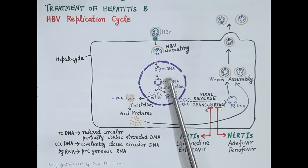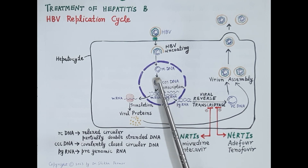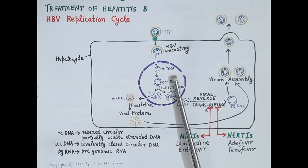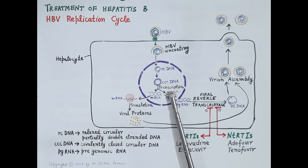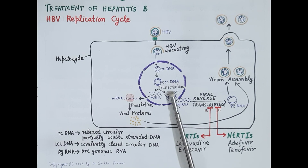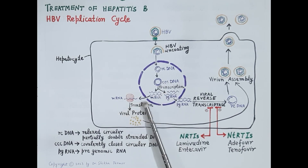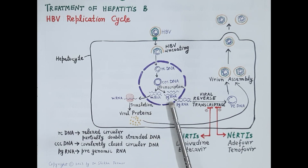Hepatitis B virus DNA is an rcDNA — that is relaxed circular, partially double-stranded DNA — it is an incomplete DNA. This viral DNA reaches the host nucleus, where this incomplete viral DNA gets completed and becomes cccDNA, that is covalently closed circular DNA.